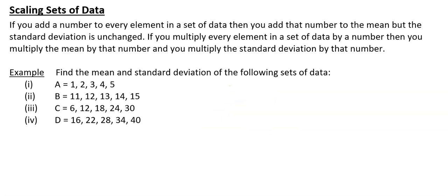We're going to look at a couple of examples. The task is to find the mean and standard deviation of the following sets of data. The smart way is to work out the mean and standard deviation of the first set, and then think about what the relationship is between set A, set B, set C, and set D — and then transform your means and standard deviations accordingly.